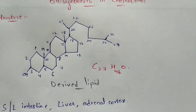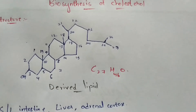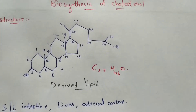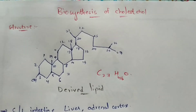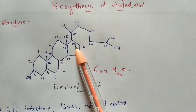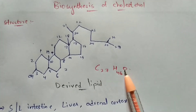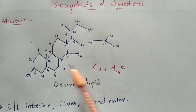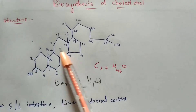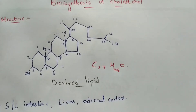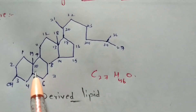Hi friends, my name is Vanendra Gupta. In this video let us discuss the biosynthesis of cholesterol. Before entering into the biosynthesis, we need to know the structure of cholesterol. The molecular formula of cholesterol is C27H46O — it consists of totally 27 carbons. There is a double bond between the 5th carbon and 6th carbon.